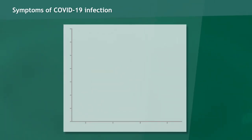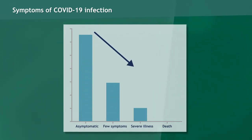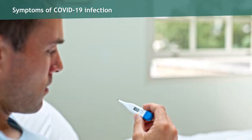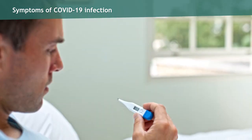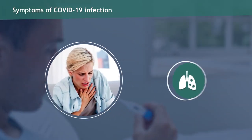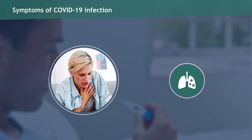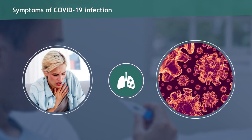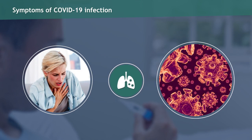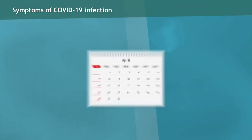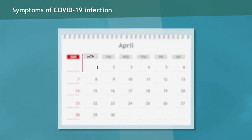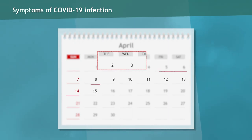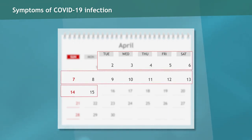Confirmed COVID-19 infections have ranged from asymptomatic to few symptoms to severe illness symptoms and death. Symptoms can include fever, cough, shortness of breath, or pneumonia, making it difficult to distinguish this disease from influenza, especially early on. The CDC reports that symptoms of COVID-19 may appear in as few as two days or up to 14 days after exposure.